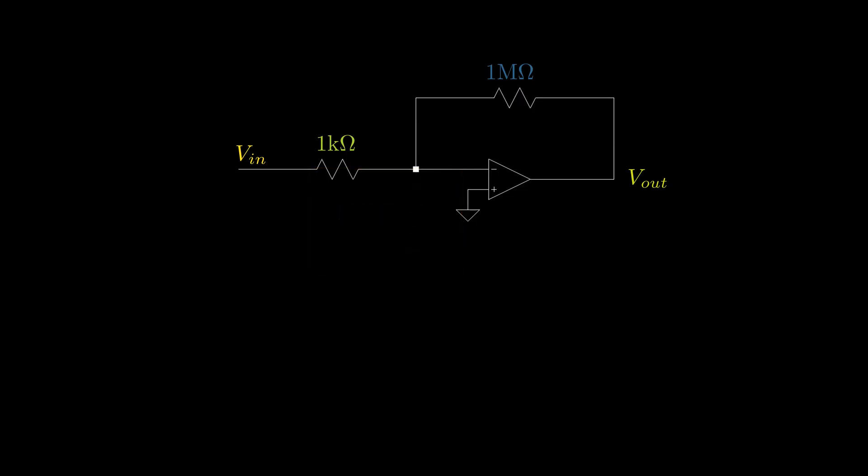Hence, whoosh whoosh whoosh whoosh. Look familiar? All along our T network in the feedback loop was a 1 mega ohm resistor.